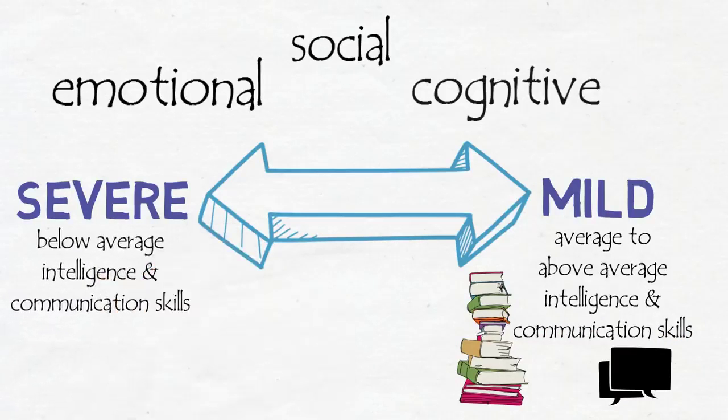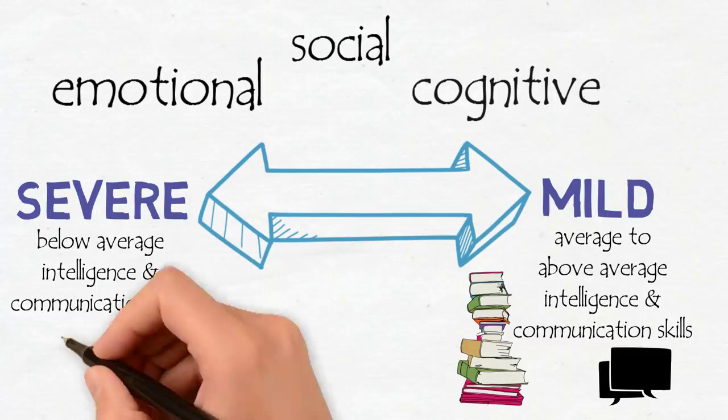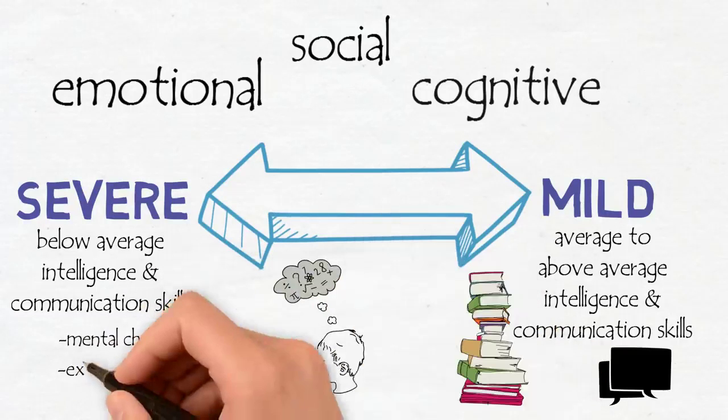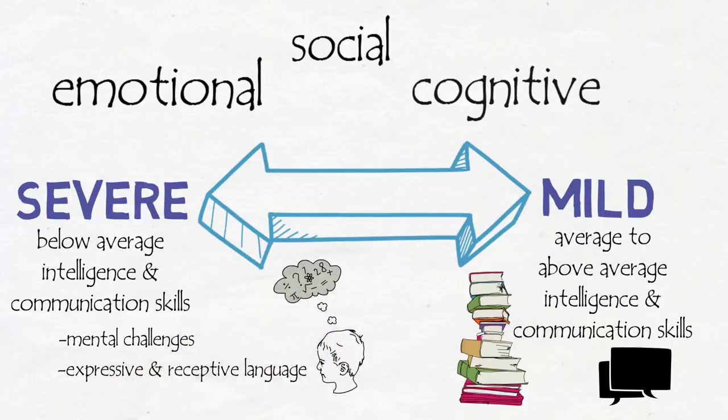On the other end of the spectrum, children with low-functioning ASD have severe signs and symptoms, which of course reflects their intelligence and communication skills. Students with low-functioning ASD are more likely to be challenged mentally, have epilepsy, and have limited expressive and receptive language.